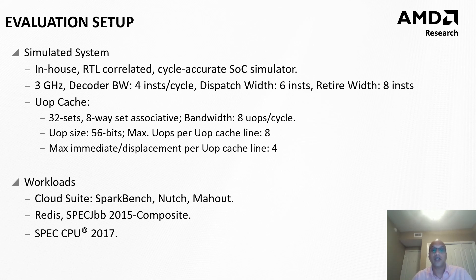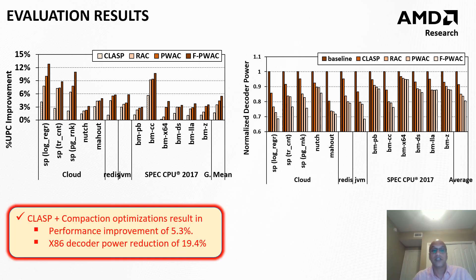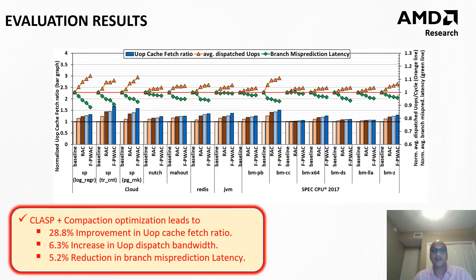To give a brief primer on our evaluation setup, we used an in-house RTL-correlated simulator. Some configuration parameters are shown in the slide, but for more details you can look at the paper. We used different benchmarks from CloudSuite, Enterprise, and SPEC CPU 2017 applications to evaluate our approach. The results show that CLASP plus compaction increases performance by 5.3%, reducing x86 decoder power by 19.4%. Similarly, the UOP cache fetch ratio is improved by 28.8%, UOP cache dispatch bandwidth is increased by 6.3%, and branch misprediction latency is reduced by 5.2%.